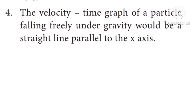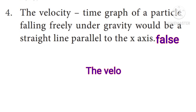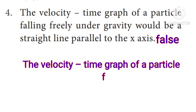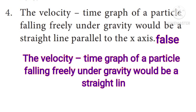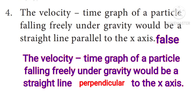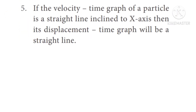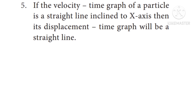Question 4: The velocity-time graph of a particle falling freely under gravity would be a straight line parallel to the x-axis — answer: false. The correct statement is: the velocity-time graph of a particle falling freely under gravity would be a straight line perpendicular to the x-axis. Question 5: If the velocity-time graph of a particle is a straight line inclined to the x-axis, then its displacement-time graph will be a straight line — answer: true.